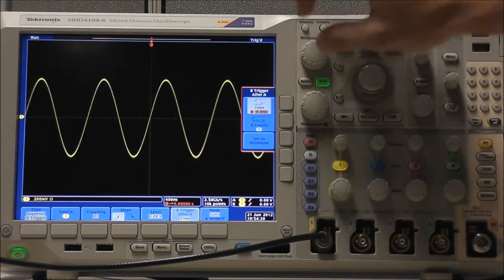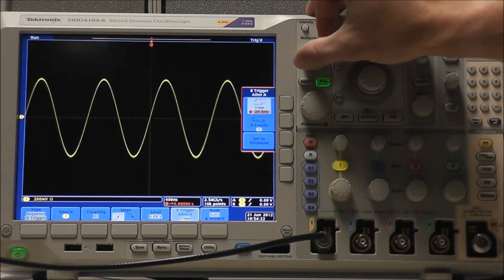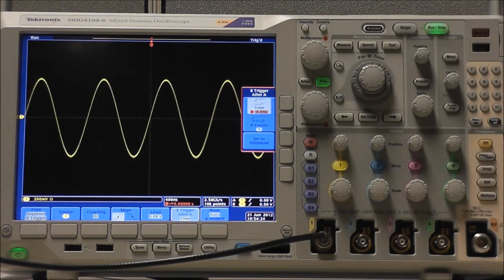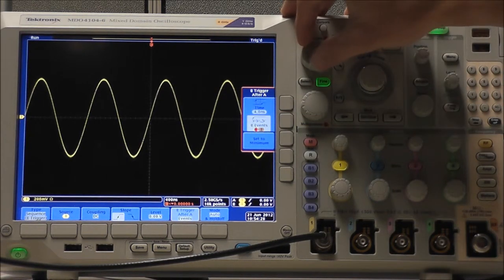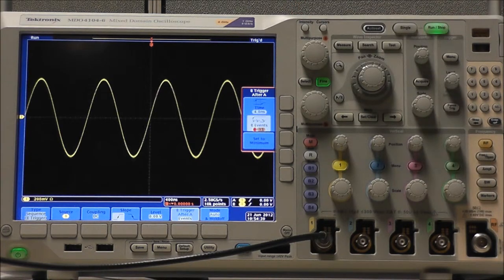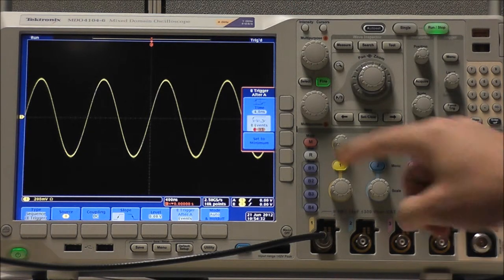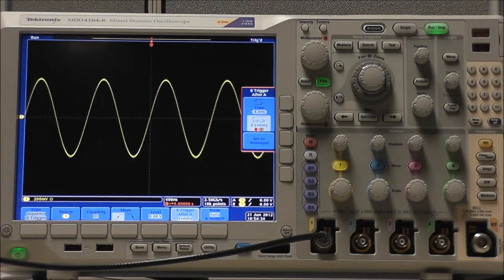We can select a specified amount of time to elapse between the occurrences of events A and B before the scope will trigger and display the waveform. Or we can select a specified number of B events to occur after the A event occurs before the scope will trigger and display a waveform. We can also restore these to their minimum values.